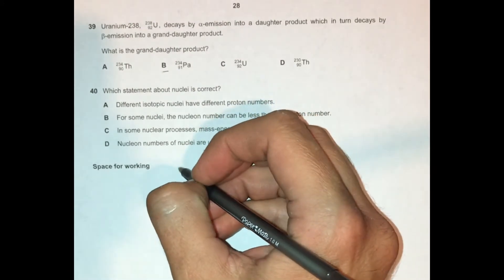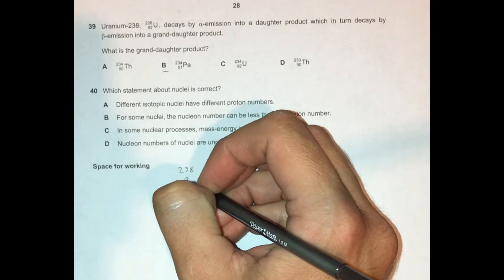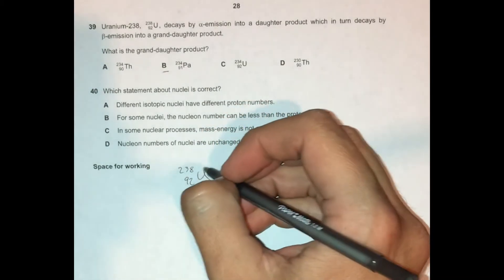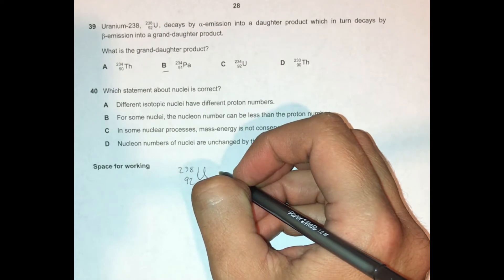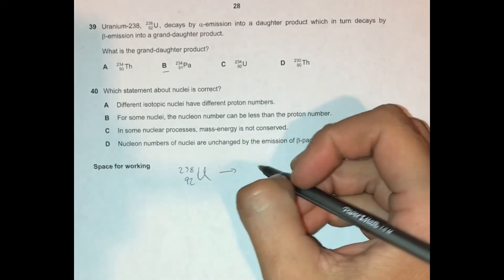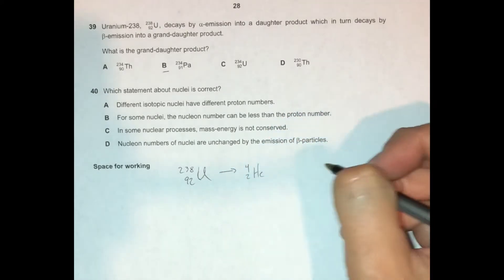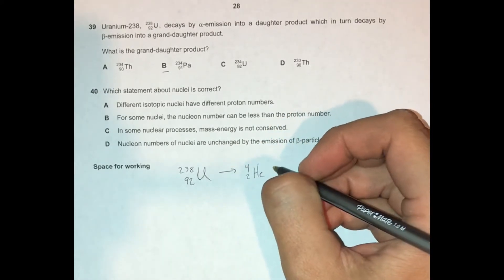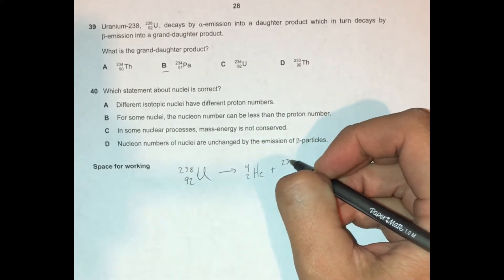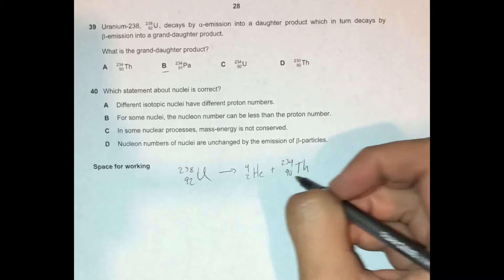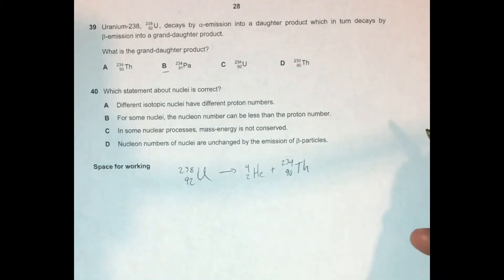I'm going to write all that out down here. So we've got uranium-238, and then it's going to emit an alpha particle. And so what must be left over? Well, this went down by four, and so it's this thorium-234. Thorium has 90 protons.